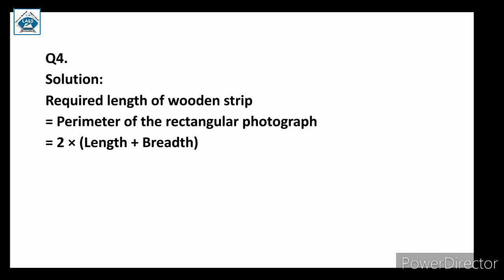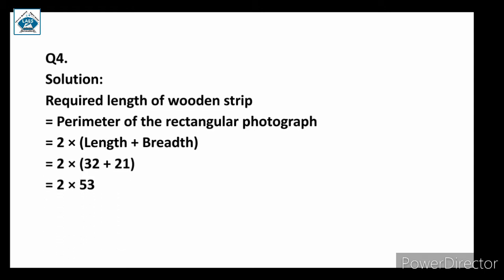Since the photograph is rectangular in shape, the perimeter will be equal to two times length plus breadth. The length is 32 centimeter and the breadth is 21 centimeter. Substituting these values, we get two times 53, which is equal to 106. We know that one meter is equal to 100 centimeter.